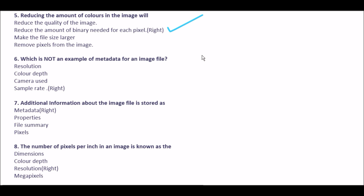Next question: which is NOT an example of metadata for an image file? Option A resolution, option B color depth, option C camera used, option D sample rate. The right answer is option D: sample rate.